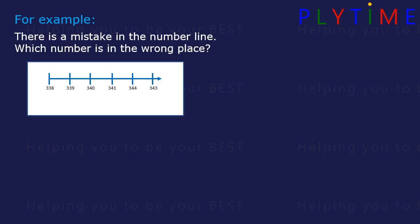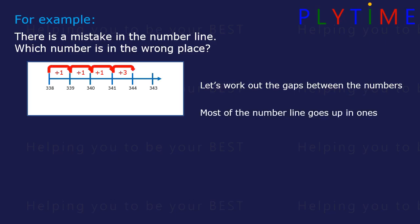There's a mistake in the number line which number is in the wrong place. Let's work out the gaps between the numbers. 338 to 339 is plus 1, then plus 1, then plus 1. 341 to 344 is plus 3. Most of the number line goes up in 1s until we get to 344. So 344 is in the wrong place.